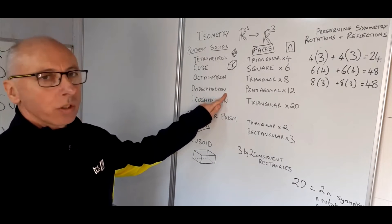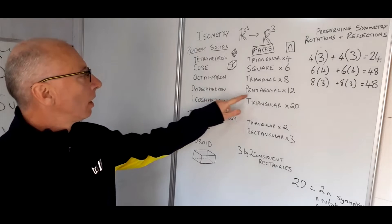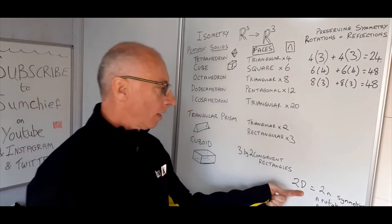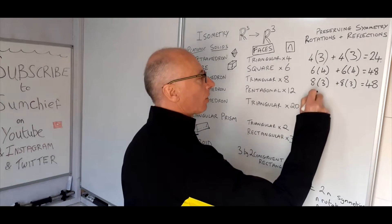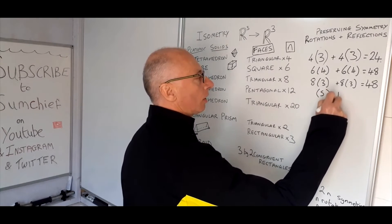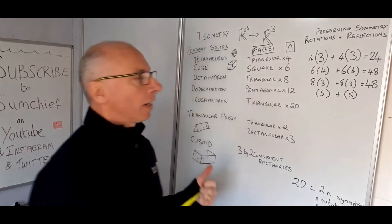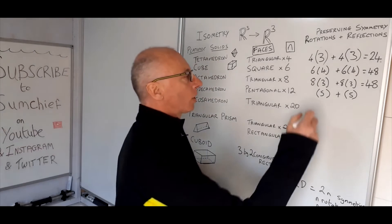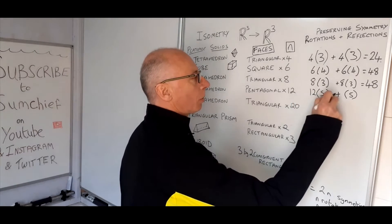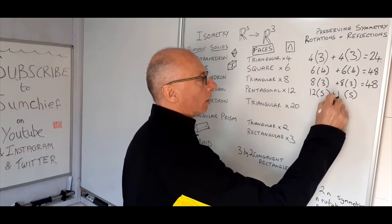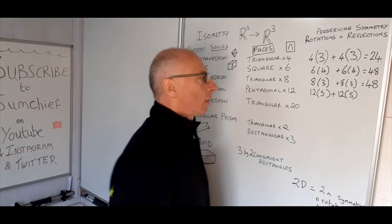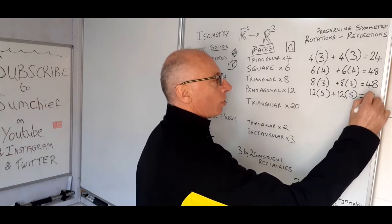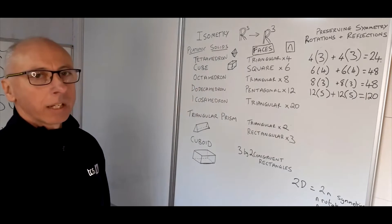The dodecahedron has 12 faces, each a pentagon. A pentagon has five sides, so five rotations and five reflections. There are 12 faces, so multiply each by 12: five times 12 is 60, plus another 60 — that gives us 120 preserving symmetries of the dodecahedron.